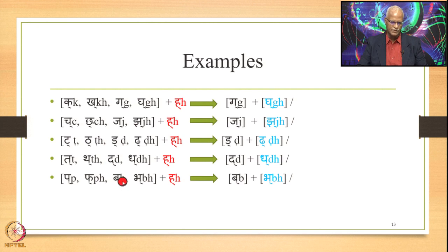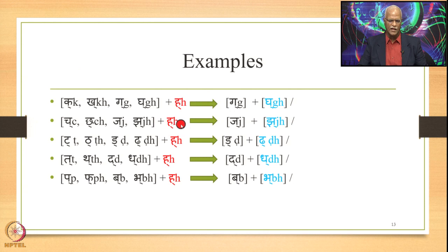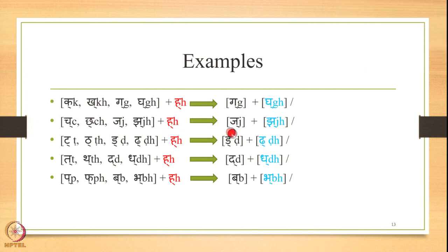Going back, we see that Ka, Kha, Ga, Gha are also part of Jhal and appear at the end of a pada, so they get substituted by the 3rd column: G, J, D, D, V. So with Ka, Kha, Ga, Gha plus H as input, Jhalam Jashonte applies and substitutes these four by the 3rd — namely G — and Jhayohonyatarasyam substitutes H by the 4th class consonant, namely Gha. Output: Ga plus Gha. Similarly, Cha, Chha, Ja, Jha plus H gives output Jha plus Jha.